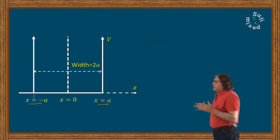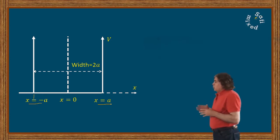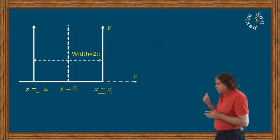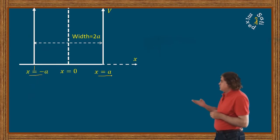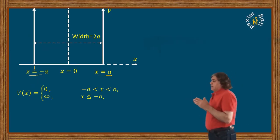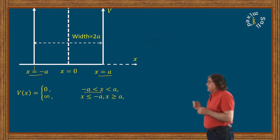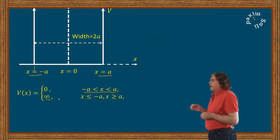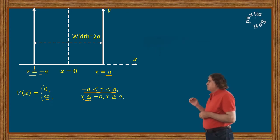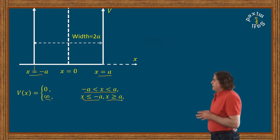This makes the width of the potential well equal to 2a. With this shape, the potential can be written as: V equals 0 inside the well where x is greater than minus a and less than a, and V equals infinity for x less than or equal to minus a and x greater than or equal to a.